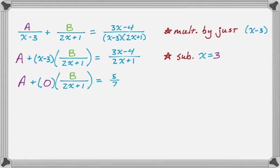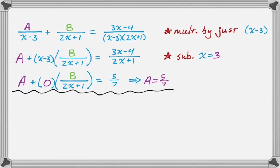It doesn't matter what was multiplied by that zero term. On the right-hand side, substituting x equals 3 gives 5/7, so A equals 5/7. We can repeat the process: going back to the original and multiplying by 2x plus 1, the 2x plus 1s cancel, leaving B on the left and 3x minus 4 over x minus 3 on the right.